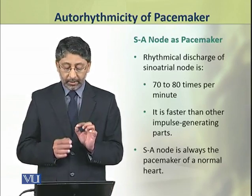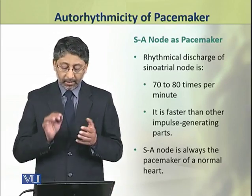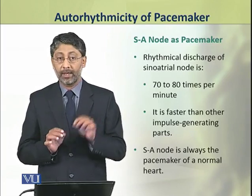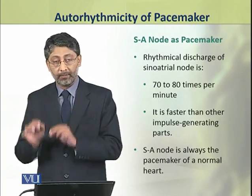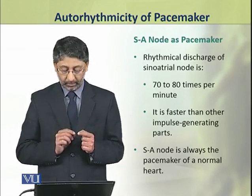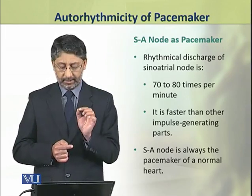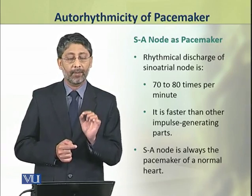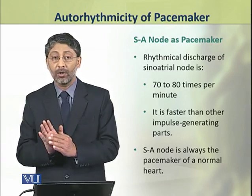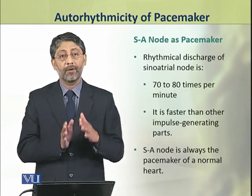However, the rhythmical discharge of the sinoatrial node is faster than all other impulse-generating parts. That is, it generates impulses at a rate of about 70 to 80 times per minute. So, the sinoatrial node is virtually always the pacemaker of a normal heart, suppressing other pacemakers from taking control. This is the pacemaker of the heart.